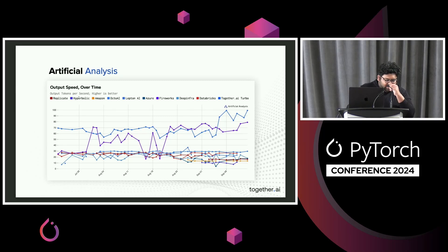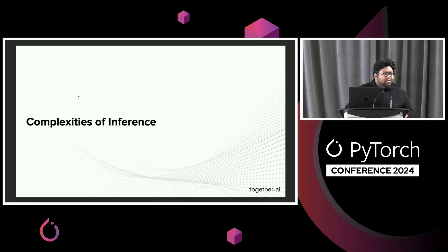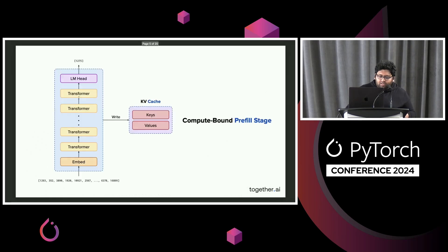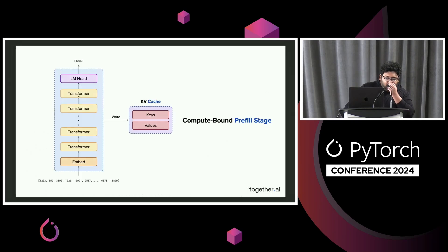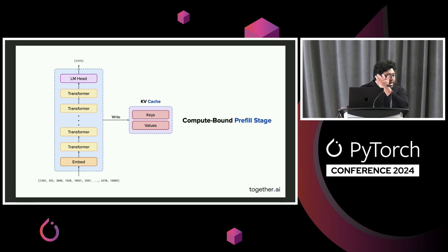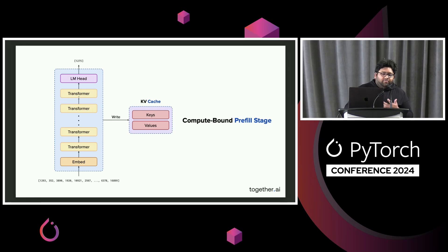Inference is not without its challenges. Let me walk through the high level. Inference can be broken into two stages. You have the compute-bound prefill stage, where a bunch of tokens go in, pass through a model — especially a transformer model — that is popular with KV cache. You're pretty much maximizing the arithmetic intensity here, as opposed to dealing with a lot of data movement and being bandwidth-bound.